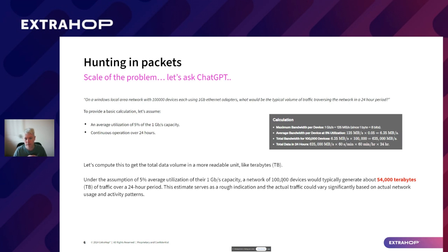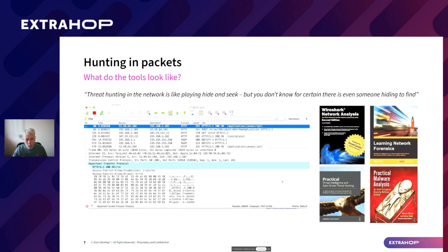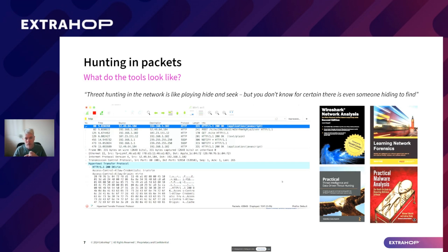You couldn't run Wireshark, capture that data, and expect to analyze it — it is an absolute nightmare. So what do the tools look like when it comes to hunting in packets? On the left-hand side you can see what it looks like when analyzing some HTTP traffic in Wireshark, and on the right-hand side are some of the books I've used over the years for this kind of work. The Wireshark Network Analysis book, for example, is about three inches thick — it's the absolute Bible when it comes to learning how to analyze network traffic. My tagline: threat hunting in the network is like playing hide and seek, but you don't know for certain there's even someone hiding to find.